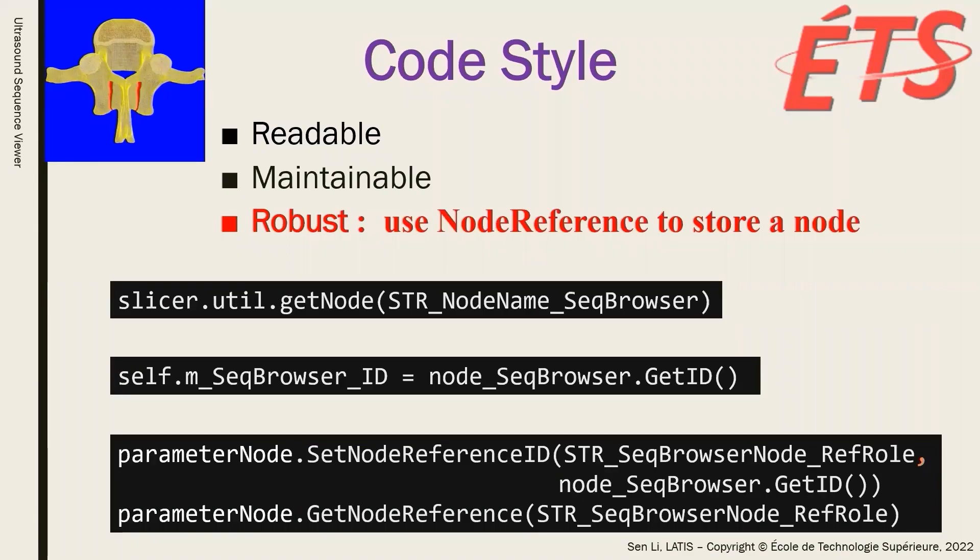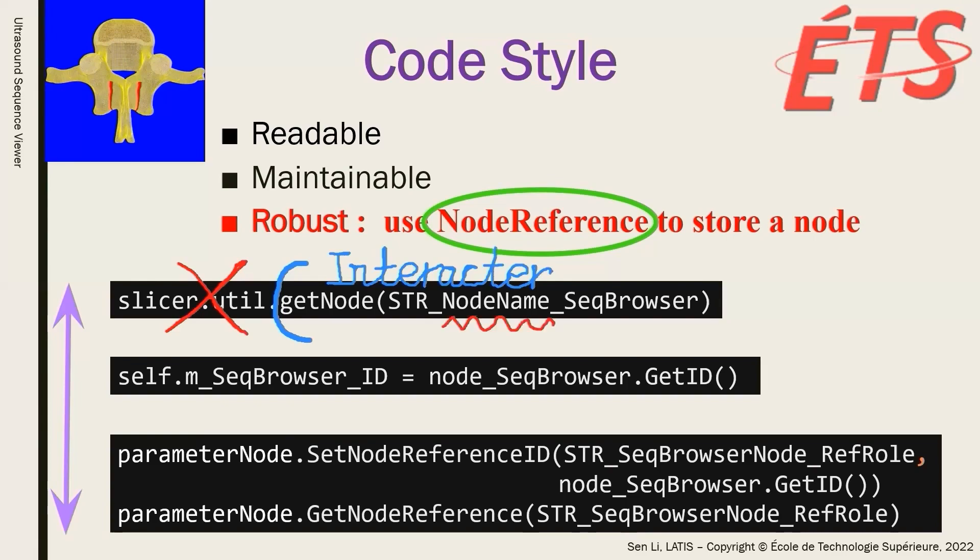The second rule to enhance robustness is to use node reference to store a node. This is specific to 3D slicer, but very important. There are three general methods to get a node in 3D slicer, and the most used one in 3D slicer Python interactor is getNode. But we should not rely on this method in the module development, because there can be multiple nodes with the exact same node name.